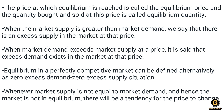The price at which equilibrium is reached is called the equilibrium price, and the quantity bought and sold at that price is called the equilibrium quantity. When market supply is greater than market demand, there is excess supply. When market demand exceeds market supply, there is excess demand. Equilibrium in the perfect competition market can alternatively be defined as zero excess demand or zero excess supply. Whenever market supply is not equal to market demand, the market is not in equilibrium and there will be a tendency for the price to change.